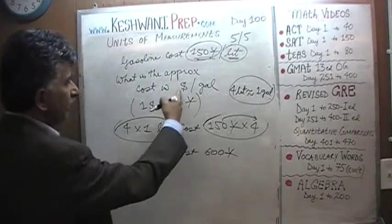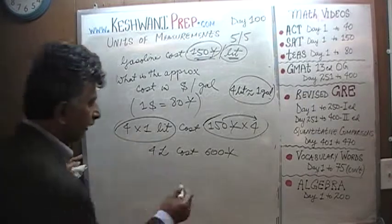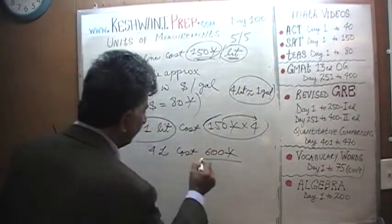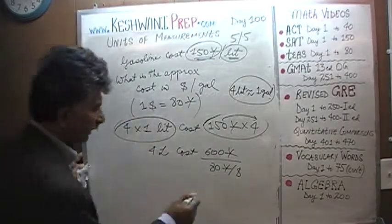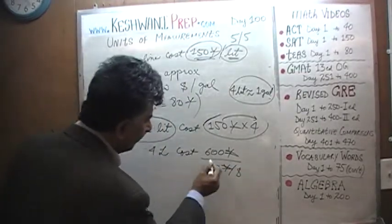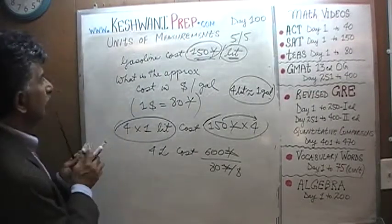4 liters cost 150 times 4 which is 600 yen. But we are not interested in yen, we want it in dollars. So we just have to convert 600 yen into dollars. 600 yen, we know 80 yen make a dollar. So that's going to cancel out the yen and we are left with 600 over 80. Let's do it here.